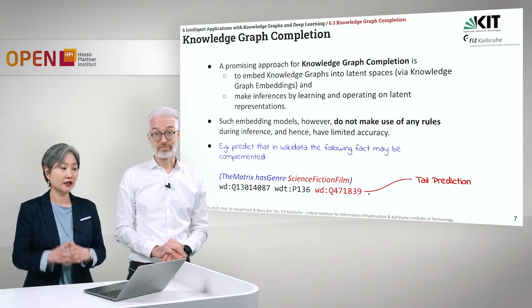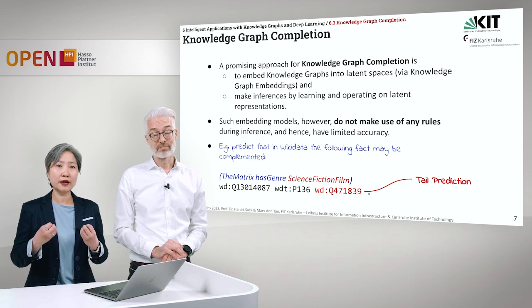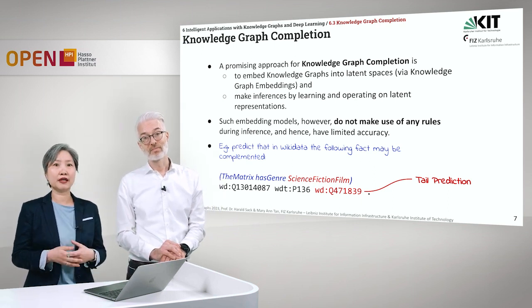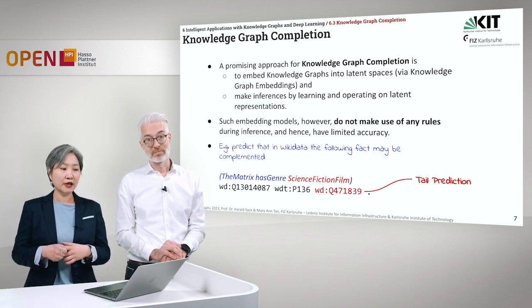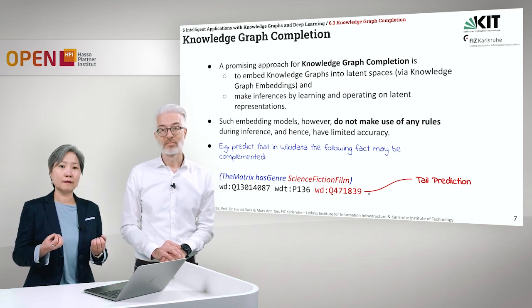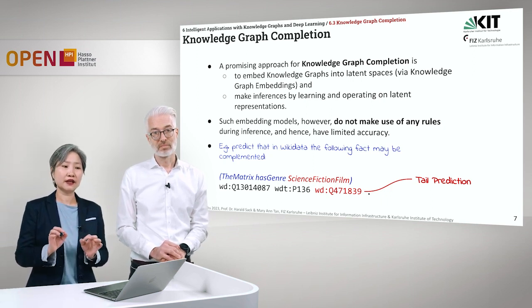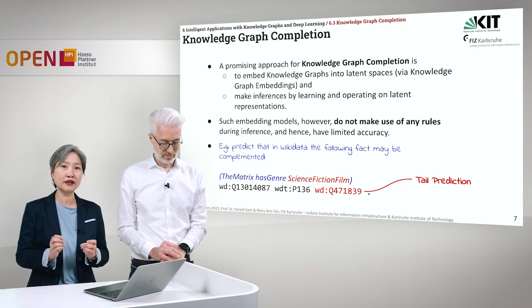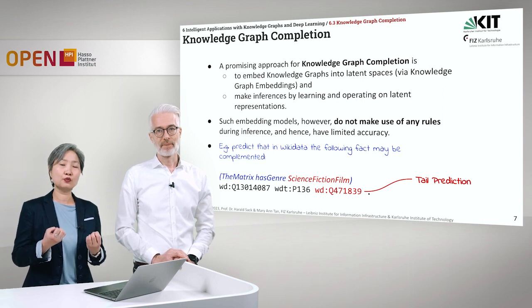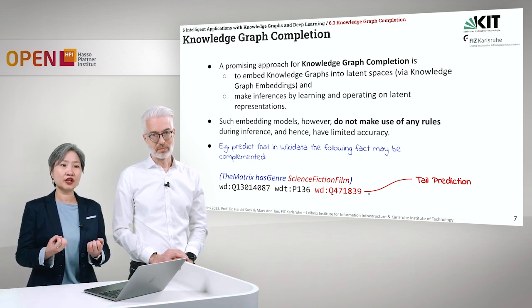An approach in knowledge graph completion is to use knowledge graph embeddings, where we embed the semantics of the entities and the relations in a latent space, and then make inference analyses by learning and operating on these representations. Such embedding models, however, do not make use of any rules — we don't encode things like 'if this entity is human, it cannot be a novel'. During inference time we use the embeddings to predict, but this means the embeddings are just an approximation, therefore the accuracy will not be very high.